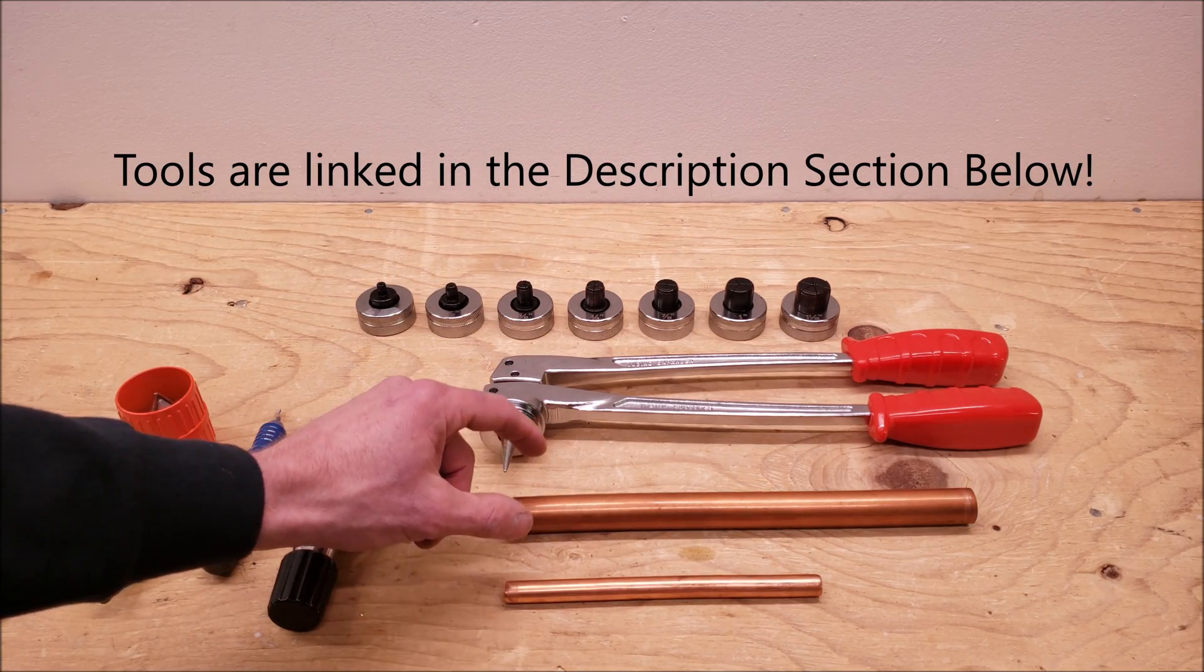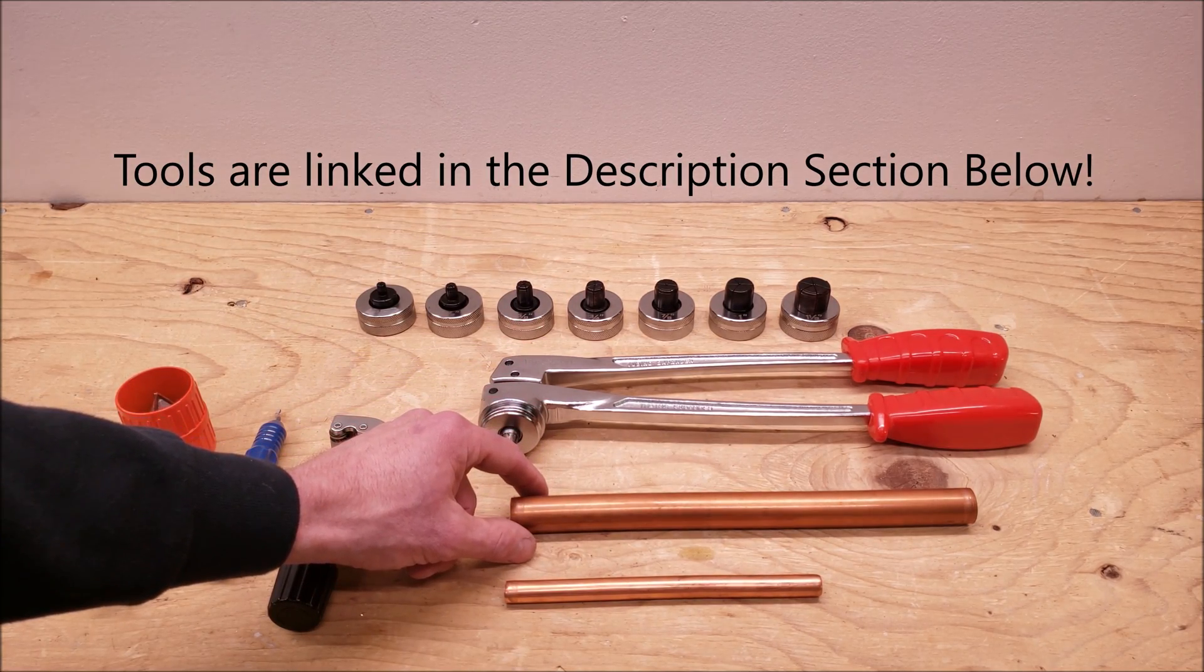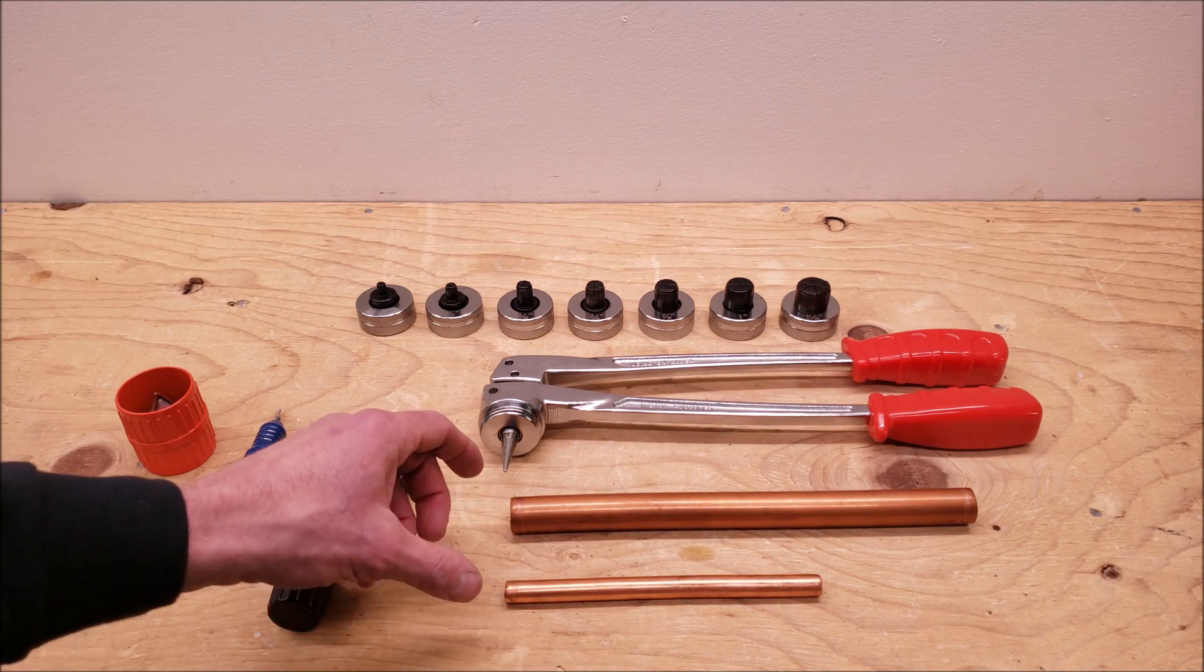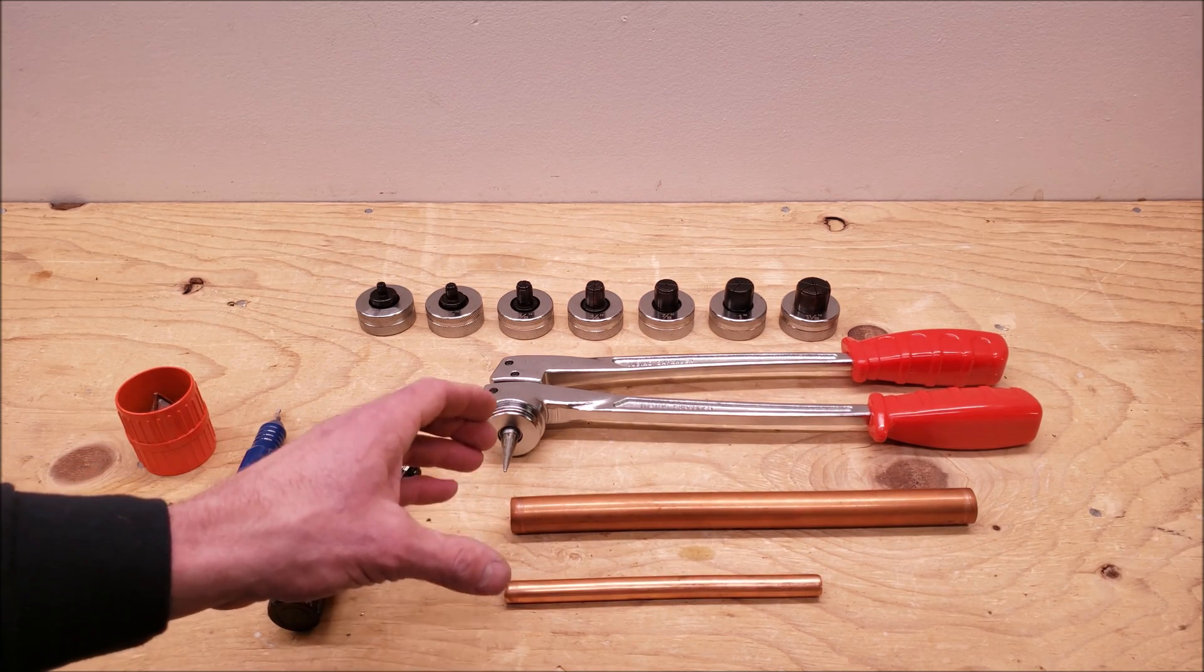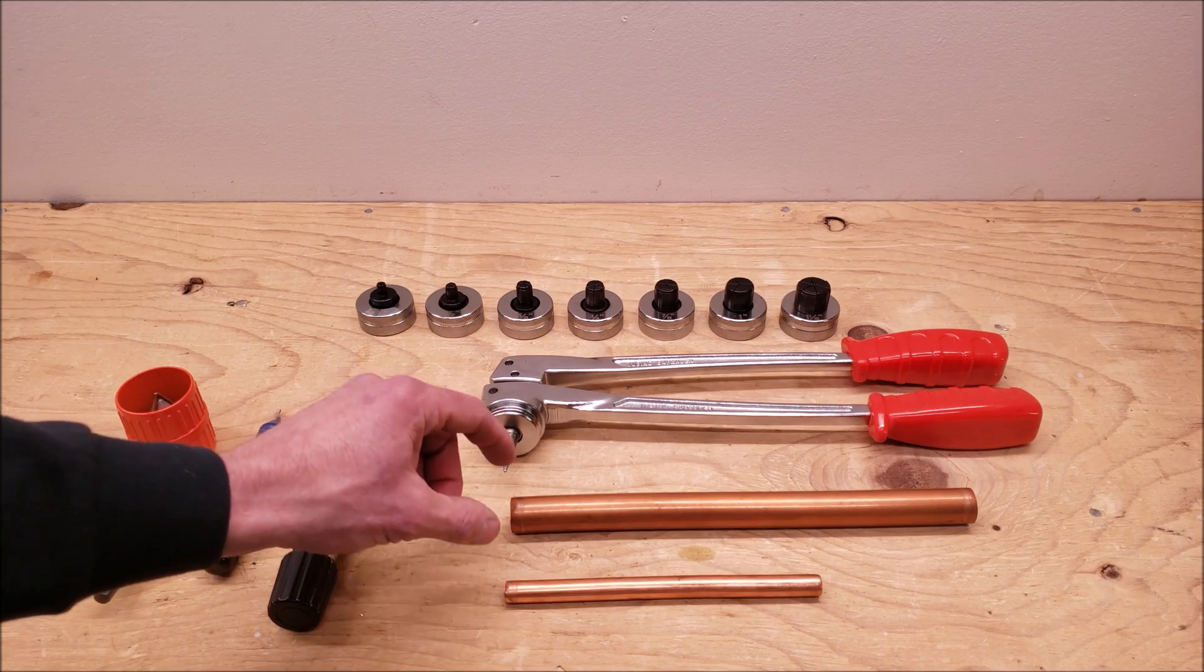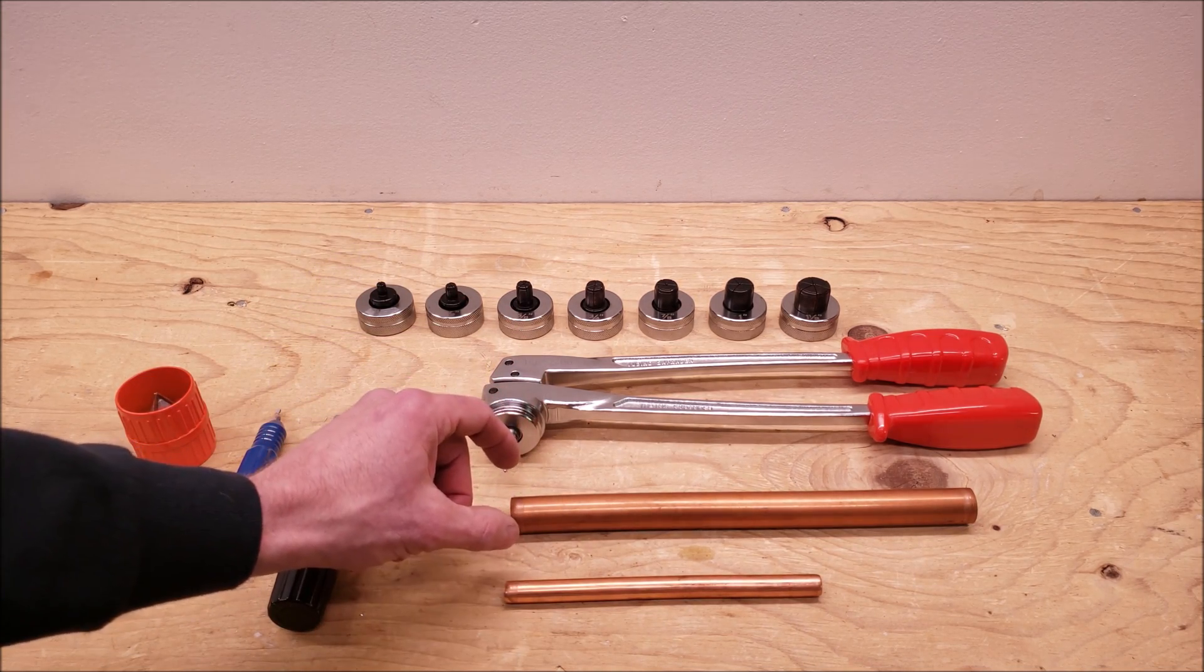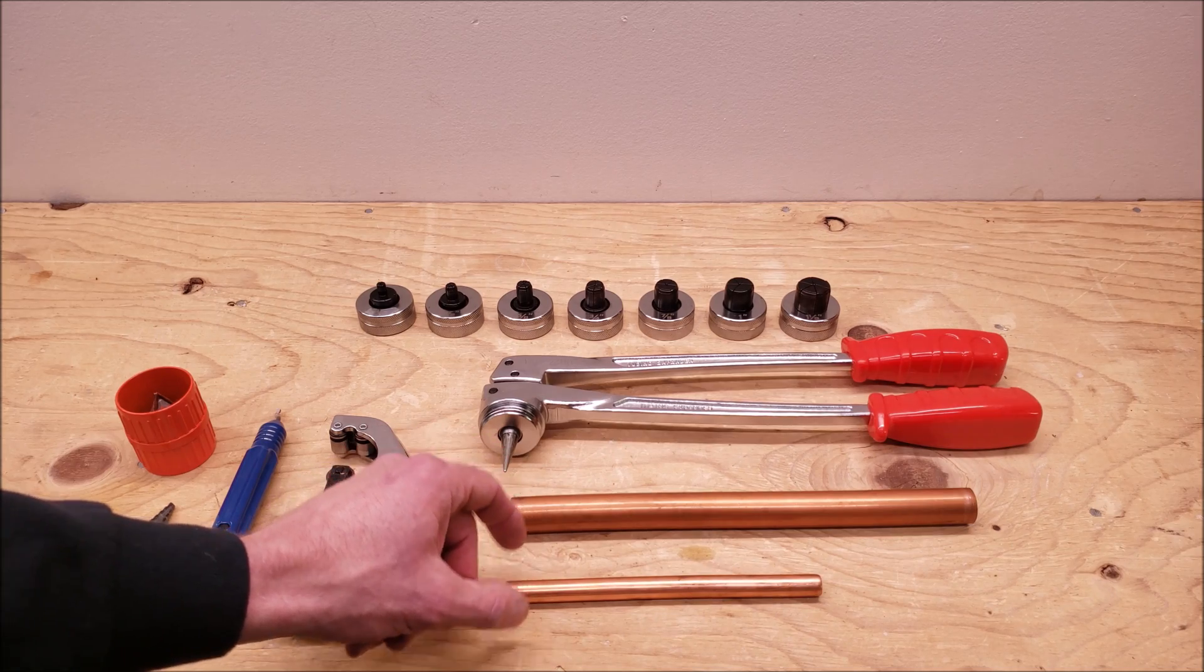So in this video we're going to show you how to swage 7/8" OD copper tubing and 1/2" OD copper tubing. OD means outside diameter. So from outside to outside this is 7/8", outside to outside this is 1/2".